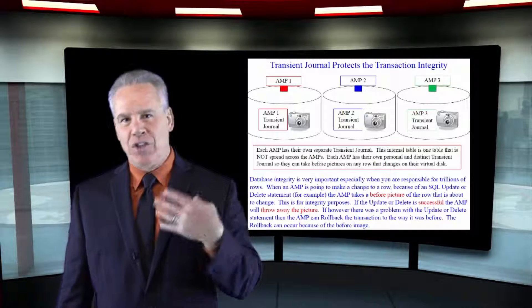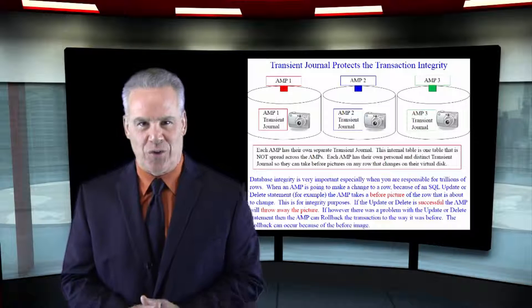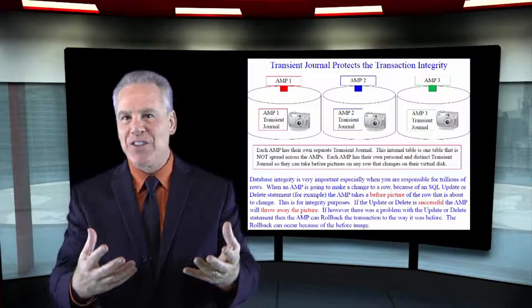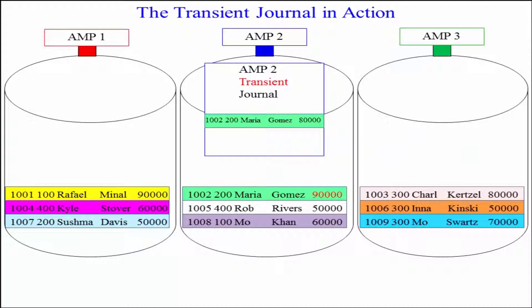We've talked a lot this chapter about the transient journal where each amp has a camera on it. So anytime a row is going to be changed on its disk, it takes a before picture for rollback purposes.